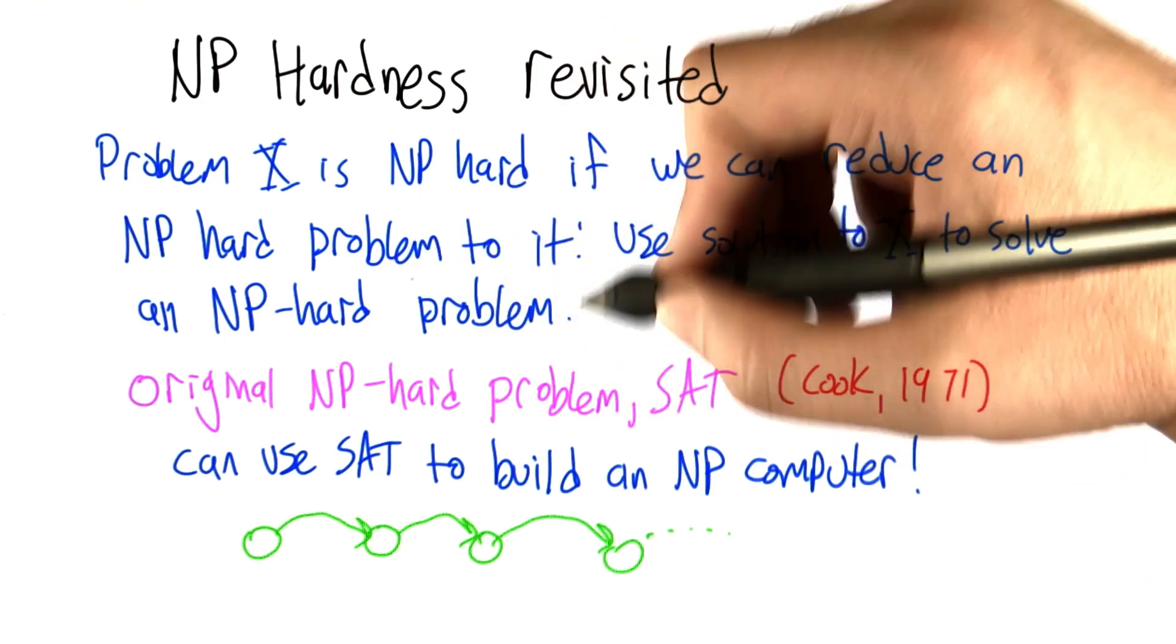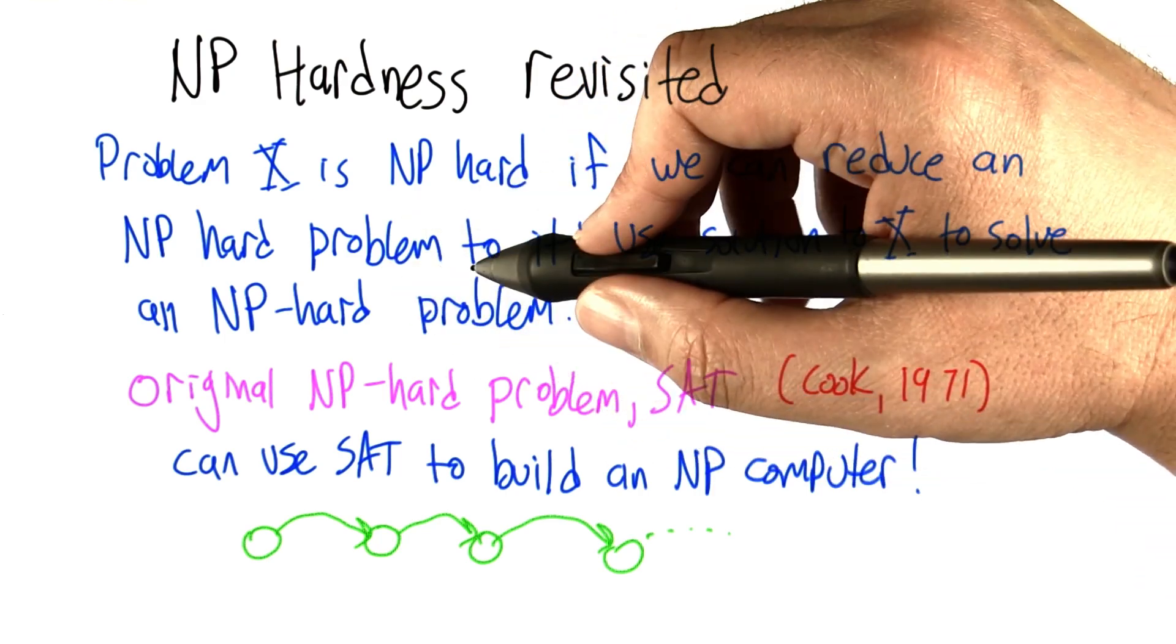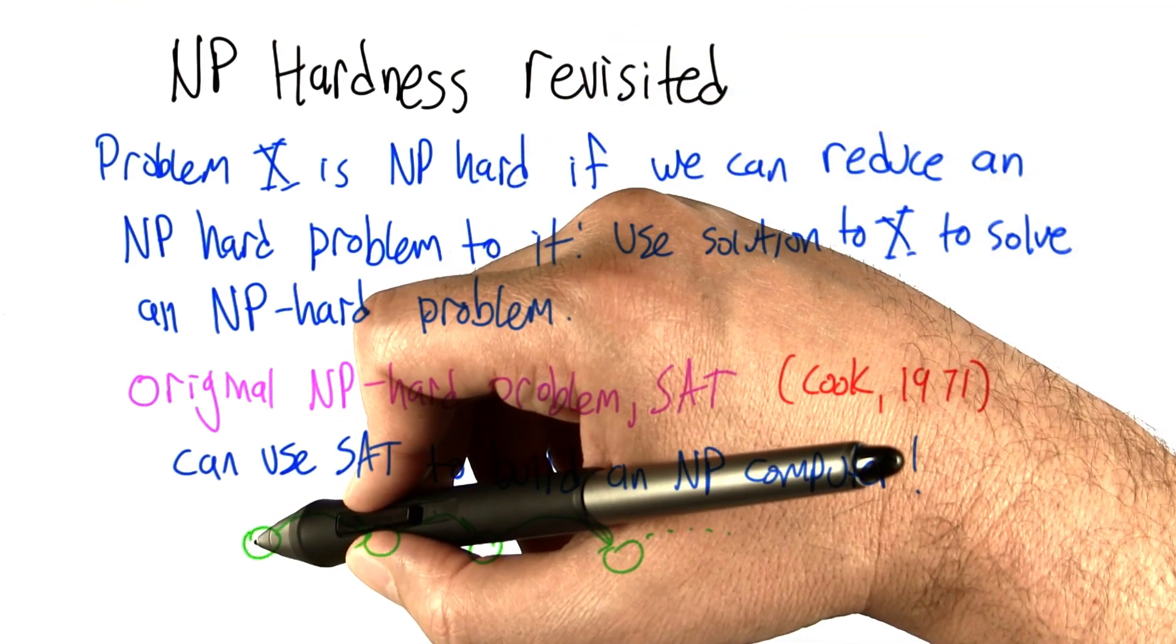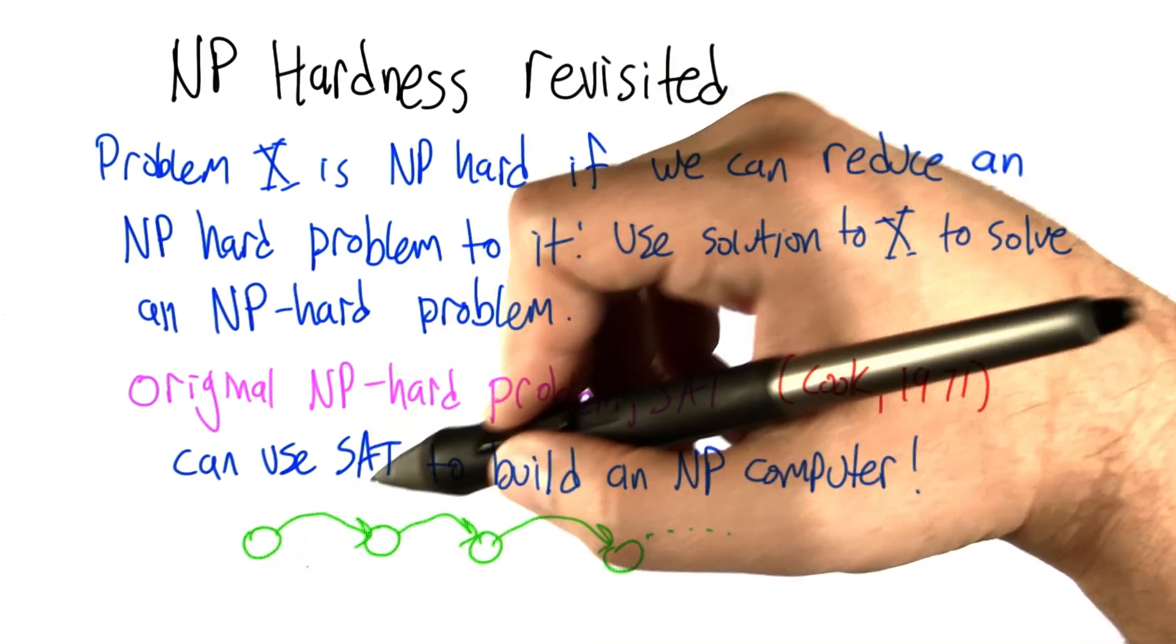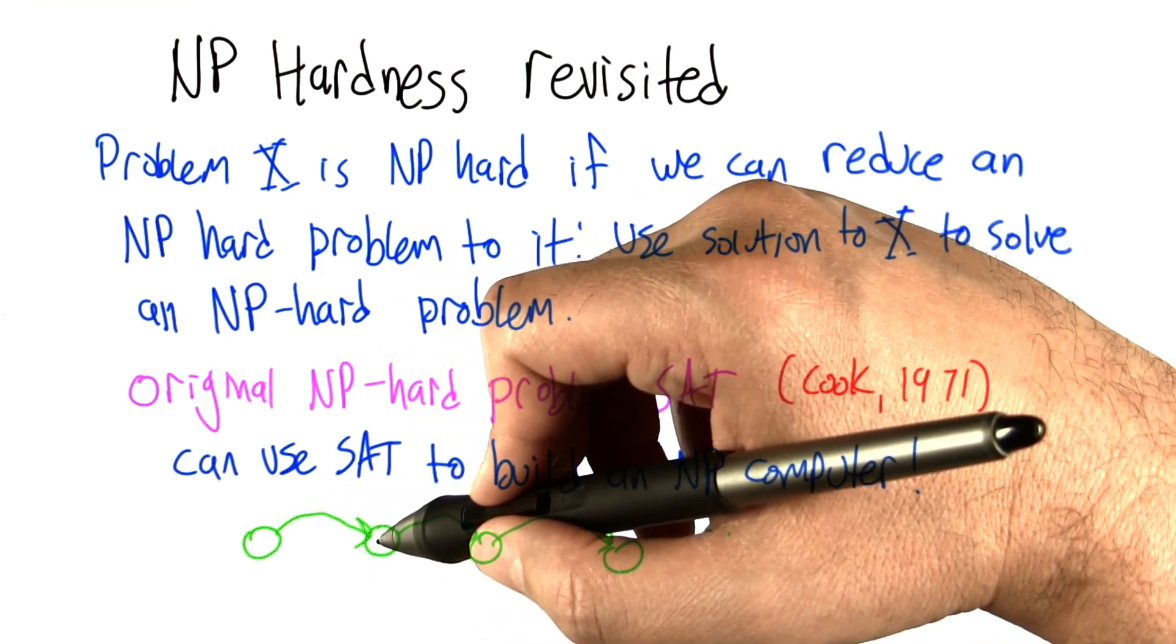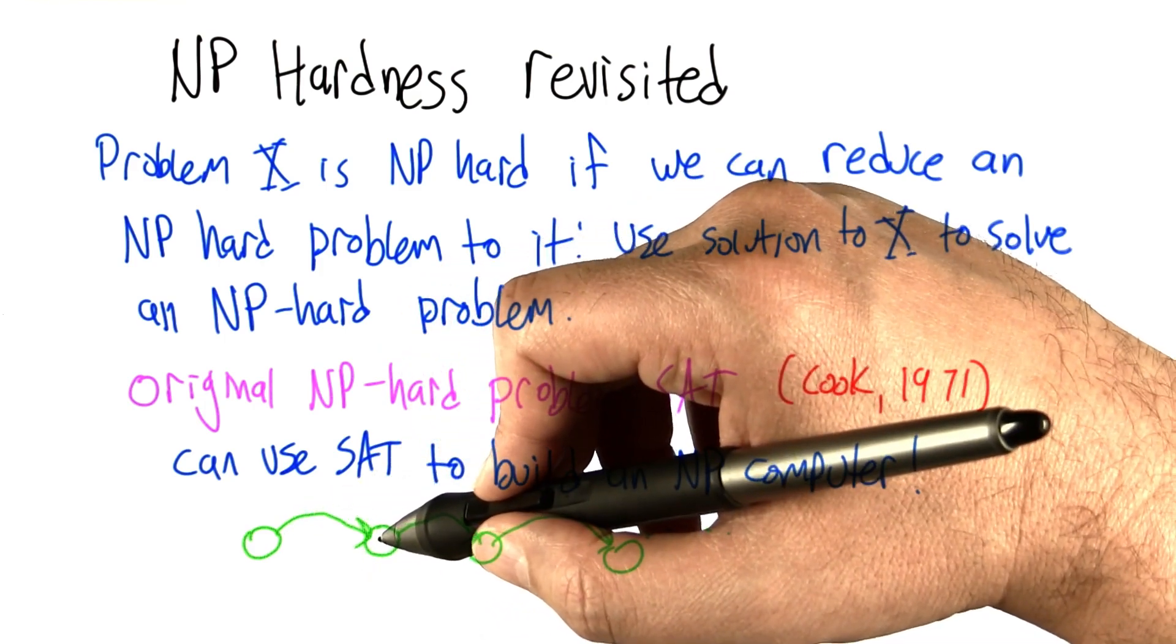Now, there's something sort of irritatingly circular or turtles all the way down-ish about this. We want to show that some problem is NP-hard, we've got some problem, we have to show that we can reduce some other NP-hard problem to it, so we need that problem to be NP-hard. How do we show that that problem is NP-hard?